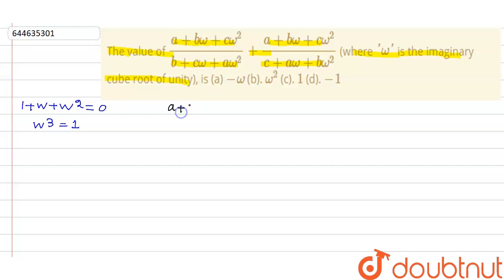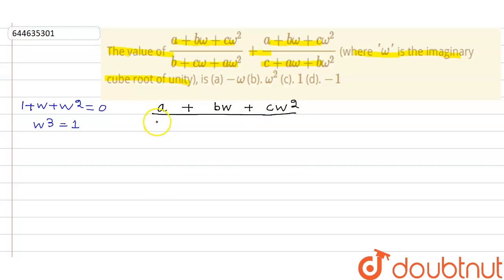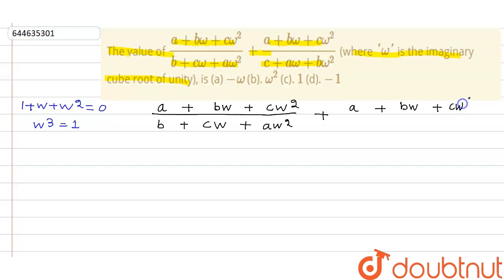We write out the expression: (a + bω + cω²) / (b + cω + aω²) plus (a + bω + cω²) / (c + aω + bω²). Now, what we do is multiply and divide strategically in these fractions.